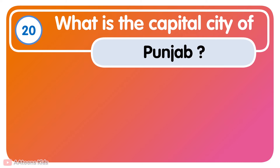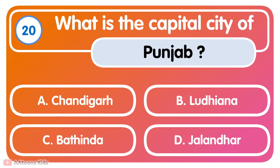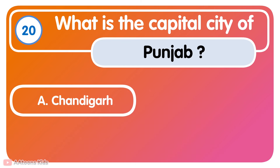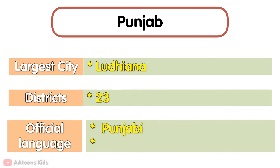What is the capital city of Punjab? Chandigarh. Chandigarh is the capital city of Punjab. The largest city is Ludhiana. It has 23 districts. The official language is Punjabi.